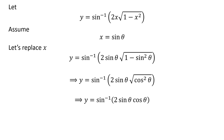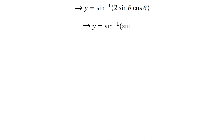We know square root of cosine squared of theta is equal to cosine of theta, so y is equal to inverse sine of 2 times sine of theta times cosine of theta. We know 2 times sine of theta times cosine of theta is equal to sine of 2 theta.